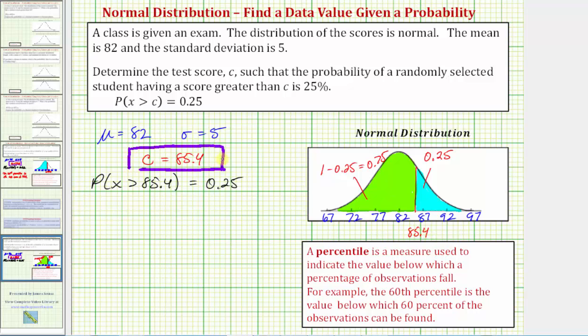A percentile is a measure used to indicate the value below which a percentage of observations fall. For example, the 60th percentile is the value below which 60% of the observations can be found.